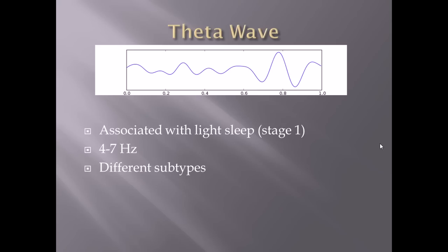Let's move on to theta waves. You can see that these are even more spaced out. While alpha were 8 to 12 hertz, theta waves are a lot lower — 4 to 7 hertz — meaning they're more spread out. Theta waves are predominantly seen in the first beginning stages of sleep, which is typically a lighter sleep. Right when you go to bed and you feel that hypnic jerk or myoclonic jerk, or active hallucinations, that will indicate stage 1 sleep and predominant theta wave brain activity.